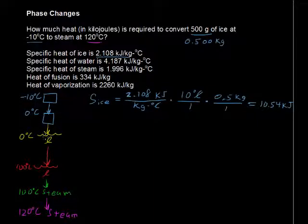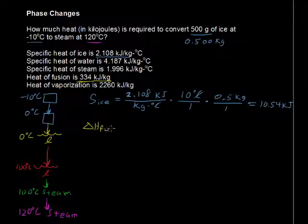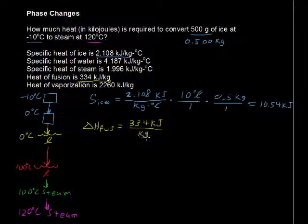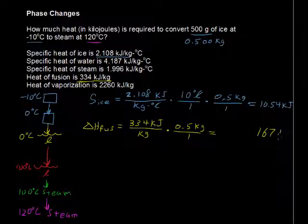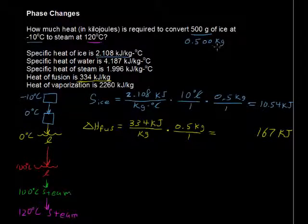Next, we're going to turn this into liquid. This is called the heat of fusion, denoted delta H sub FUS. We're told that is 334 kilojoules per kilogram — it takes 334 kilojoules to convert one kilogram of ice into liquid. All we need to do is multiply by our sample size, which is 0.5 kilograms. That cancels the kilograms, and that gives us 167 kilojoules to convert a half a kilogram of ice into a half a kilogram of liquid.